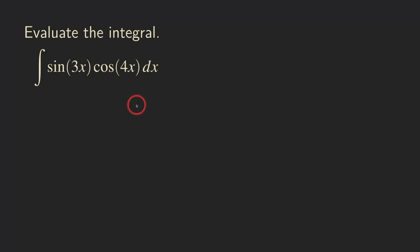So let's get started. We are going to start by writing this formula right here, which is the sum formula for the sine. That's equal to sine of a times cosine of b, plus cosine of a times sine of b.